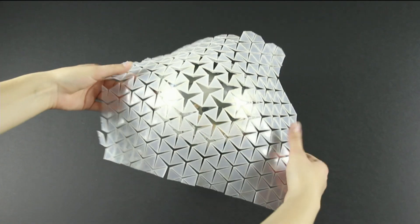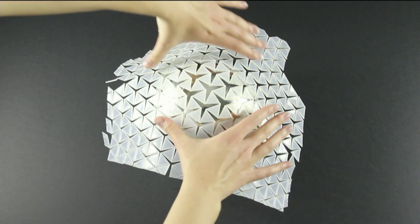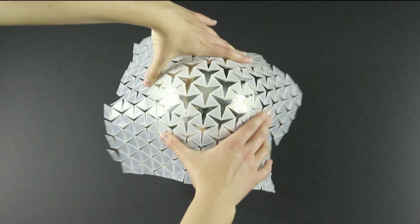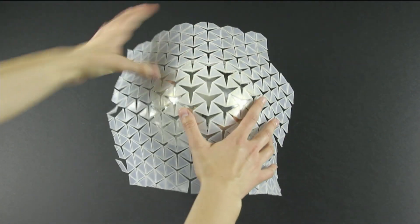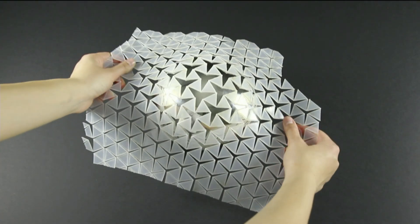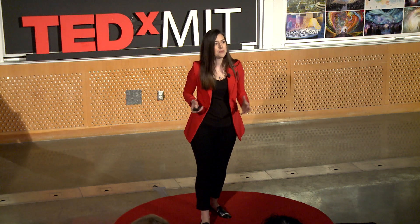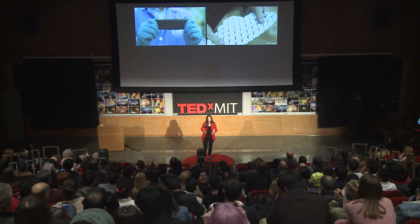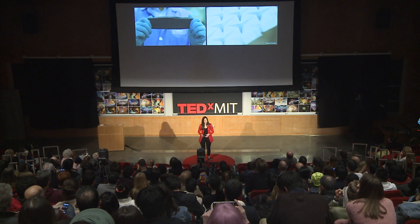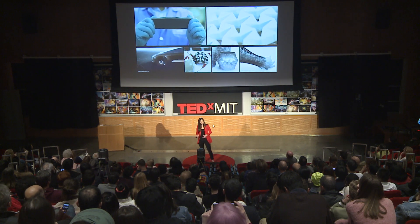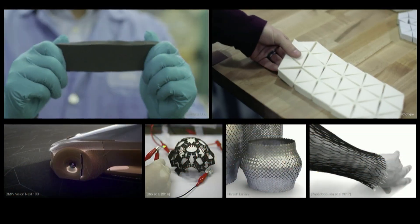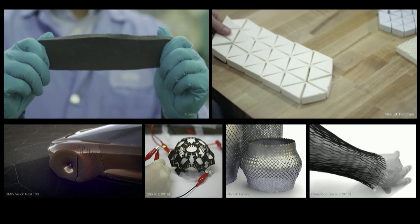These slits turn an inextensible material to become auxetic, which means that if you stretch it in one direction, it also expands in all other directions. These materials are now showing up everywhere because of their attractive properties, and they come in many different forms, like this three-dimensional foam. They've been studied by Nike for shoe soles, by BMW for concept cars, and they've been used for sensors, art, fashion, and so on.